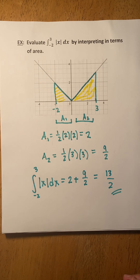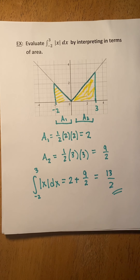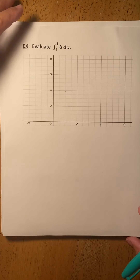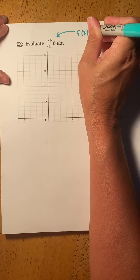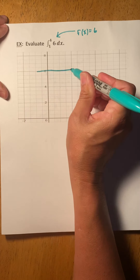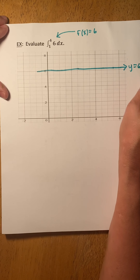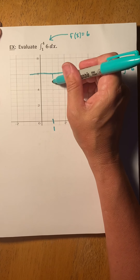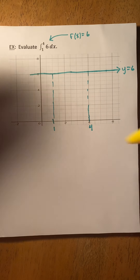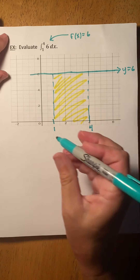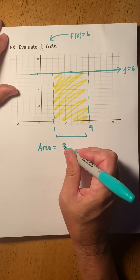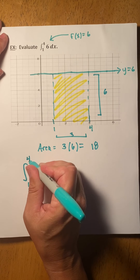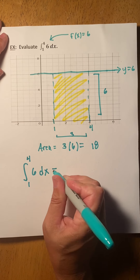Be careful with very simple functions — they tend to give people the most trouble. Consider the integral from 1 to 4 of 6. The integrand f of x equals 6 is just the horizontal line y equals 6. We are looking for the area between 1 and 4, and that shape is a clearly defined rectangle. The base is 3 and the height is 6, so the area is 18. Therefore, the integral from 1 to 4 of 6 dx is equal to 18.